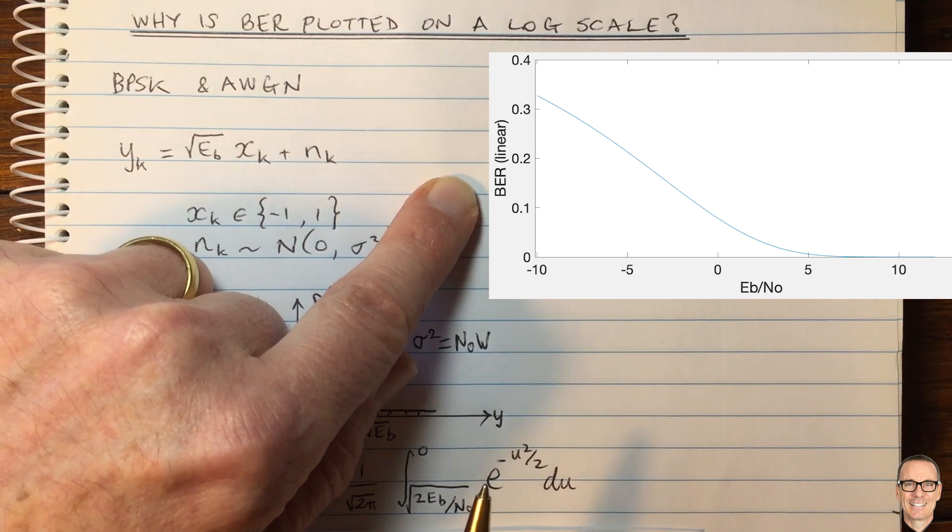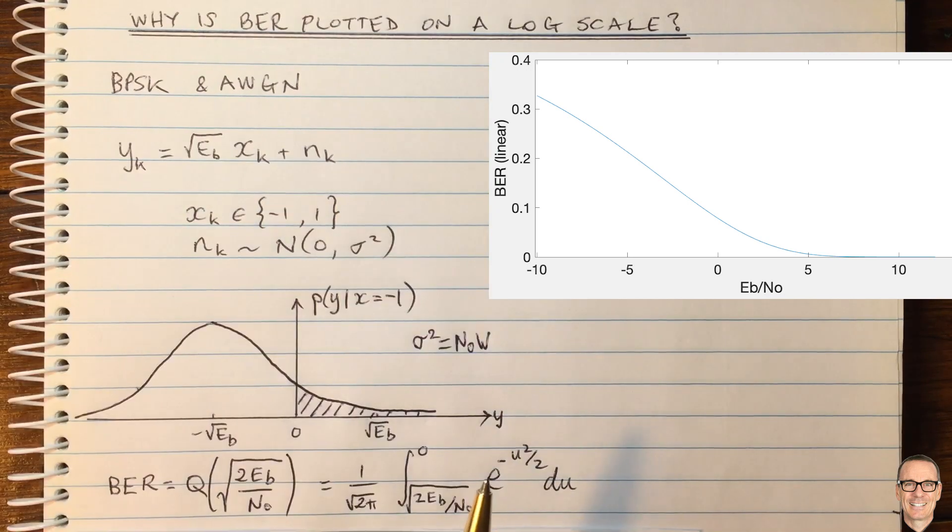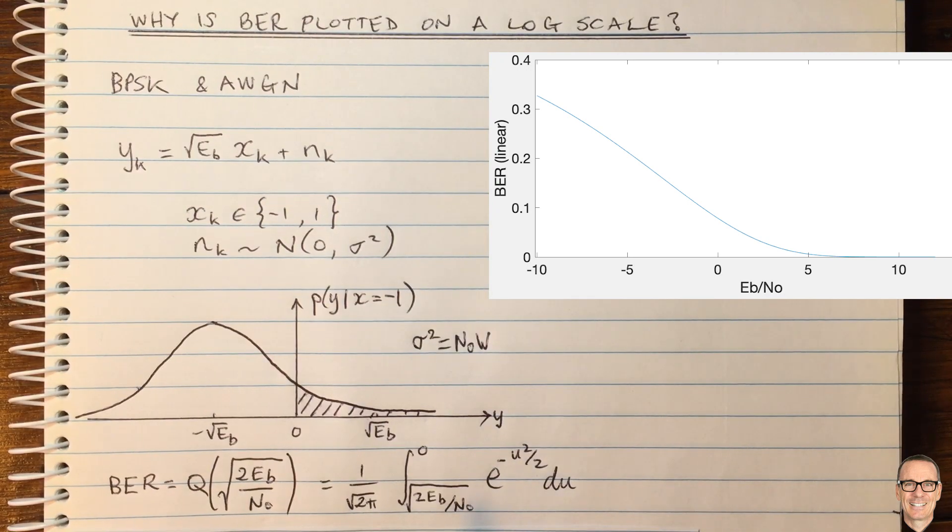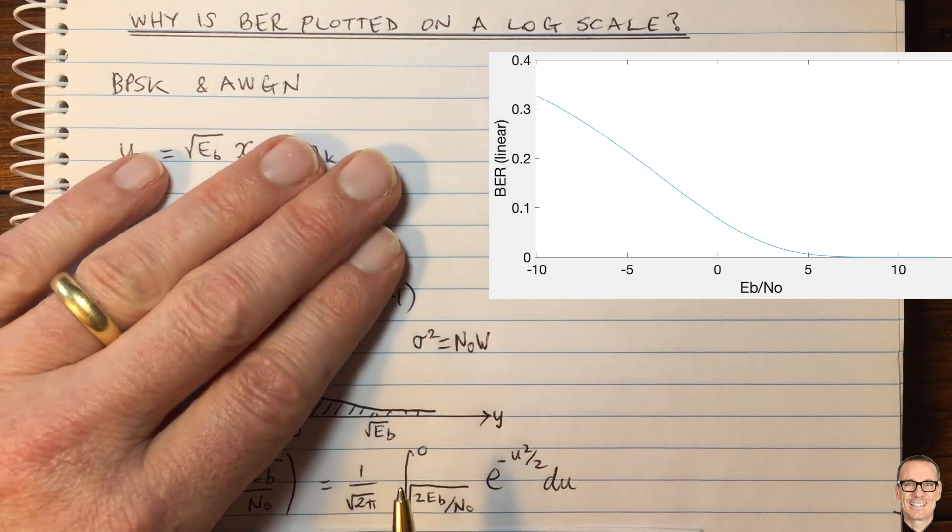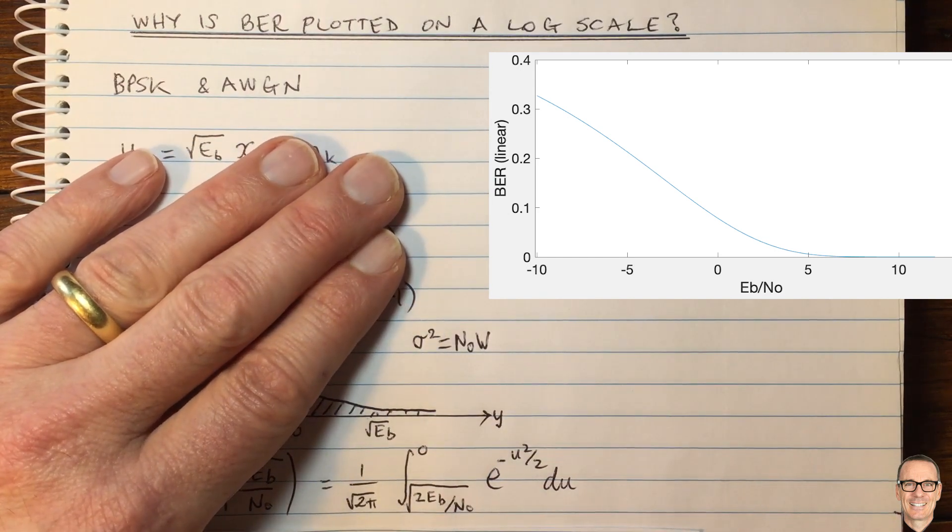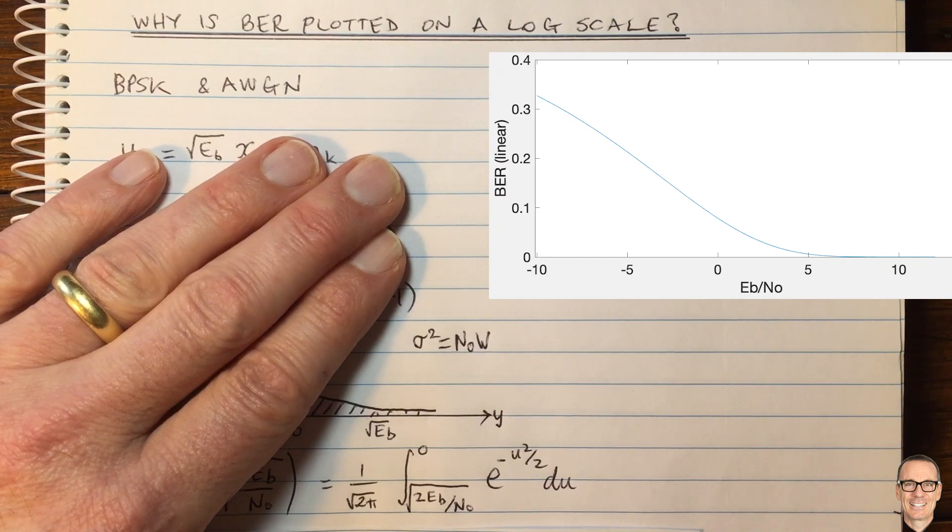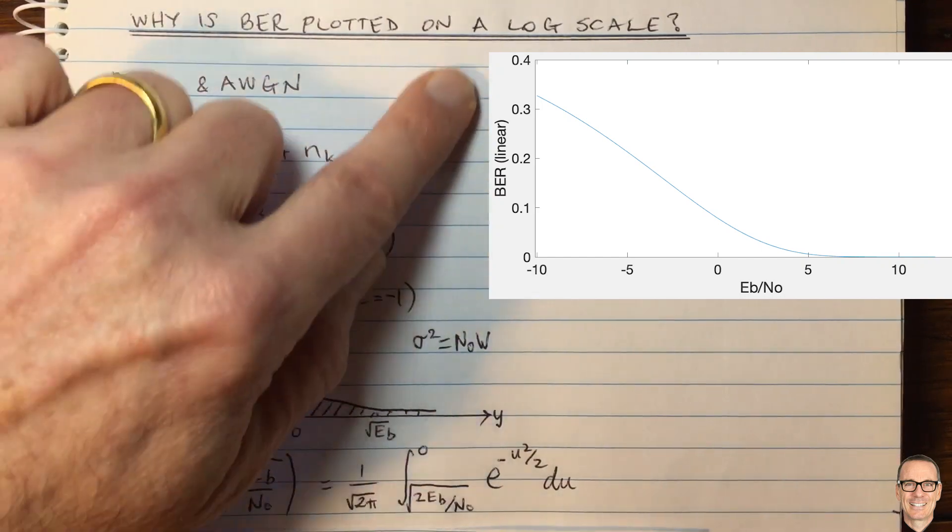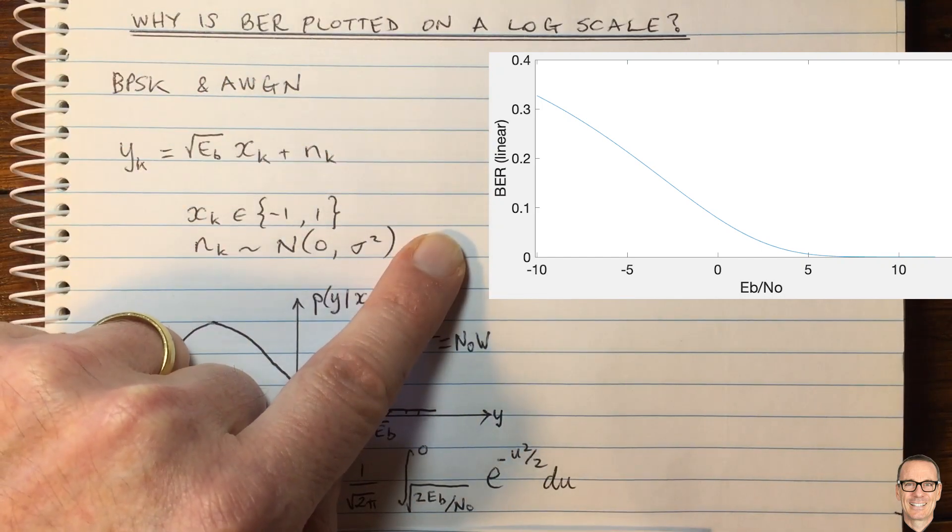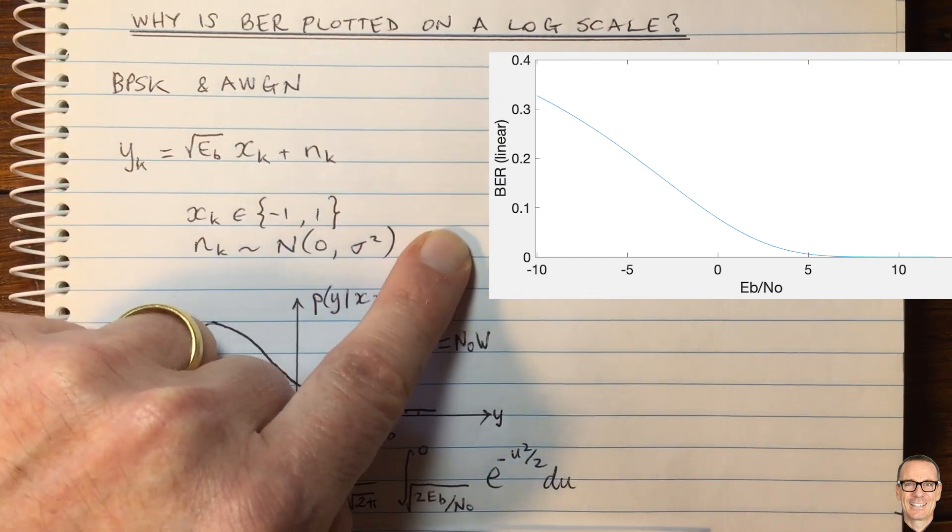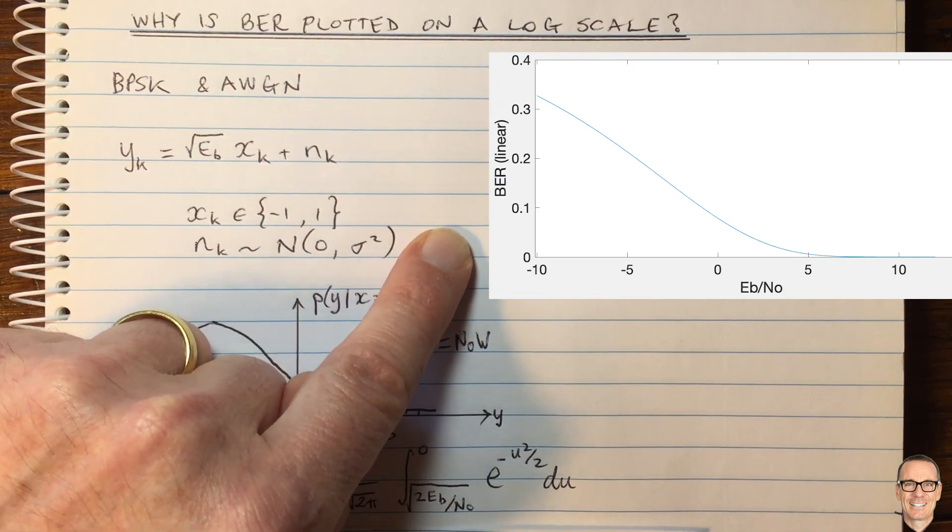But we're not only interested in those. We're actually interested in one in 100, getting one in 1,000, one in a million. For example, one in 1,000 would be something that's suitable for voice signals, one in a million for data. And from this plot here, we're not getting to see the bit error rate on this plot for those types of values.